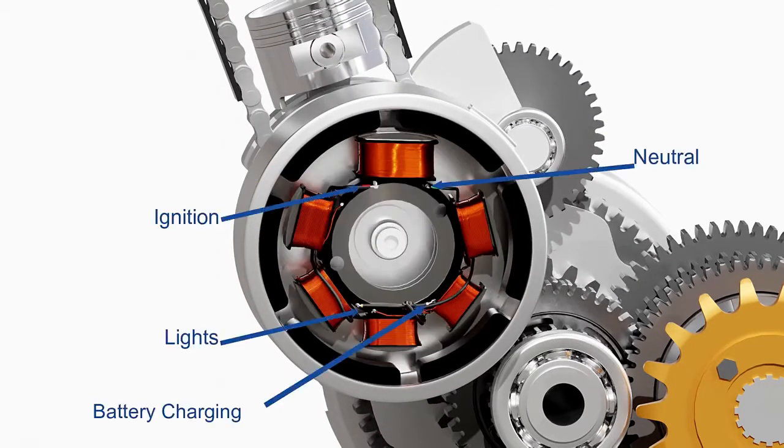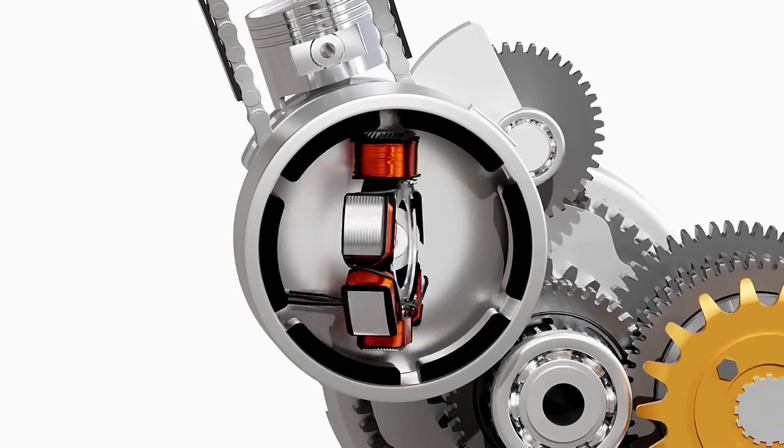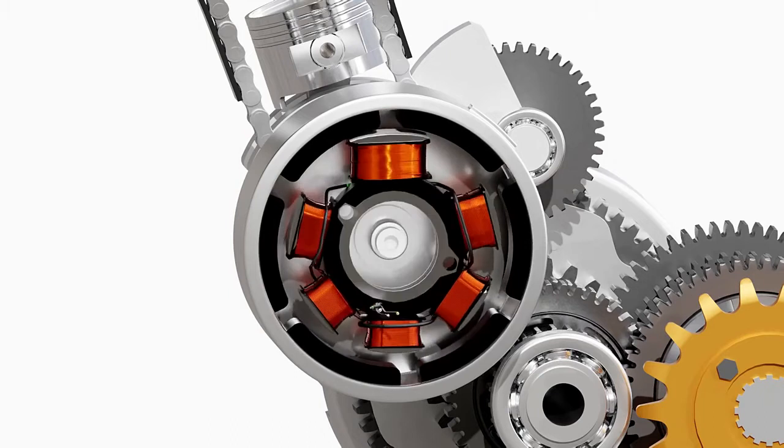Each output from the stator has different purposes, as shown here. The output for the ignition purpose is received from the exciter coil. This coil has a denser winding of thinner wire than the other coils to produce higher voltage for the ignition.